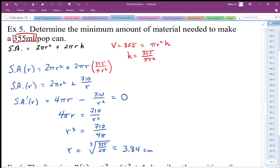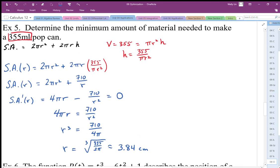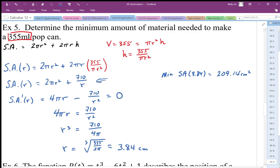The minimum amount of material needed, or the minimum surface area, I'm going to use this surface area formula. The minimum surface area is when r equals 3.84. Plugging that into my surface area equation, I end up with 2πr² plus 710 divided by r, and I get 209.14 centimeters squared of surface area to make that pop can.